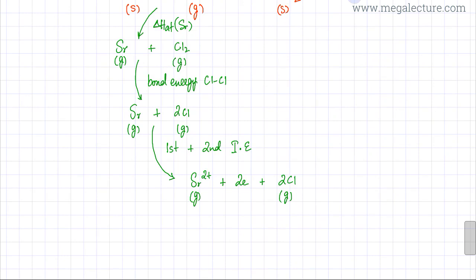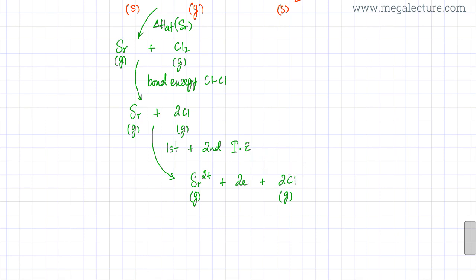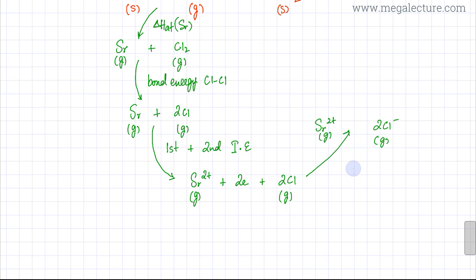The electrons lost by strontium are gained by chlorine. The two chlorine atoms each gain one electron to form Cl⁻ ions in gaseous state — so two Cl⁻ gaseous ions are formed, while Sr²⁺ gas remains. This path equals the electron affinity of Cl atoms multiplied by two, because two Cl atoms are gaining electrons.